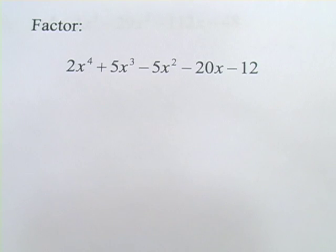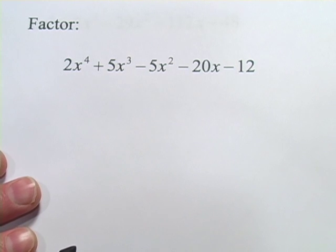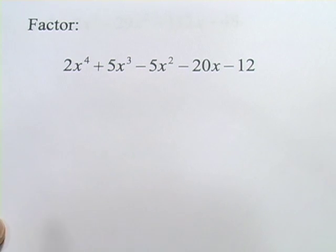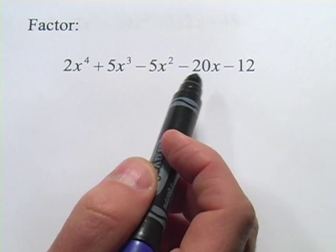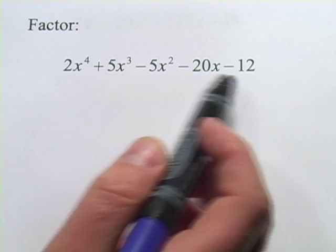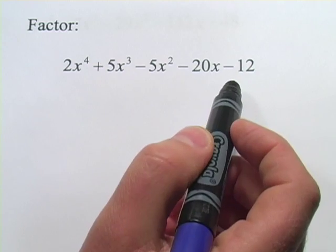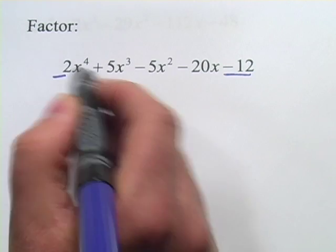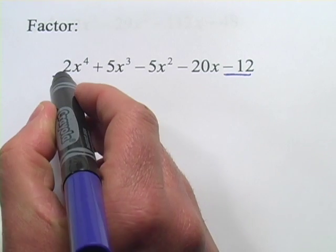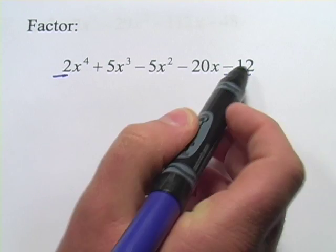So let's try one of these fourth-degree ones with some synthetic division. Now, to figure out what numbers to try, we won't know the factors of this ahead of time. To figure out what numbers to try, you're going to use something called the rational roots test. You're going to take all the factors of the constant term over all the factors of the highest term. So in this case, it would be the factors of 12 over 1, which is just themselves, and over 2.